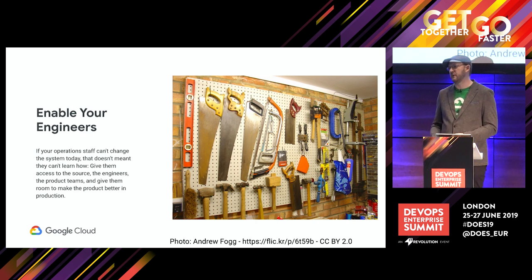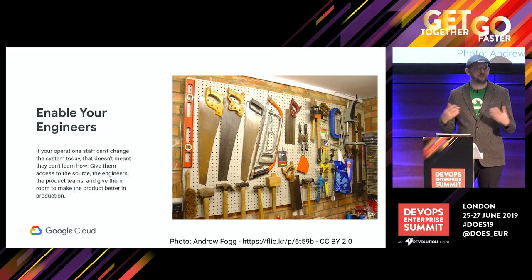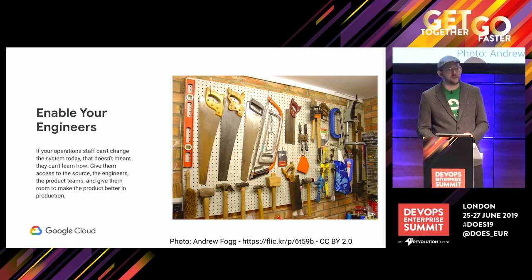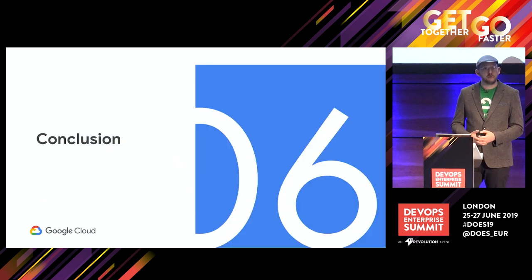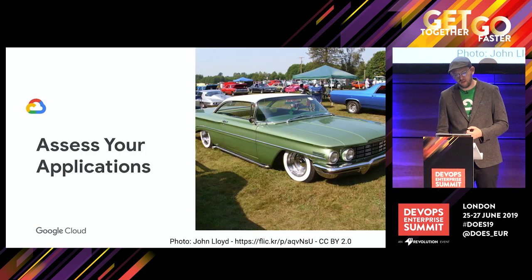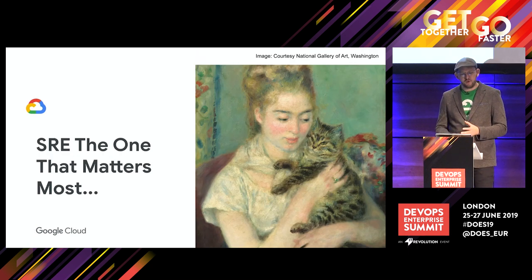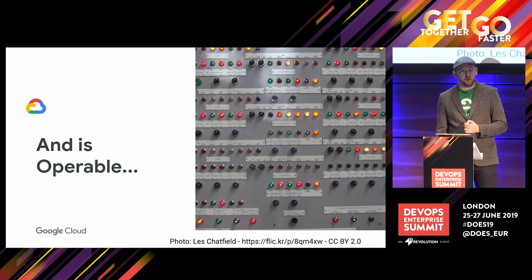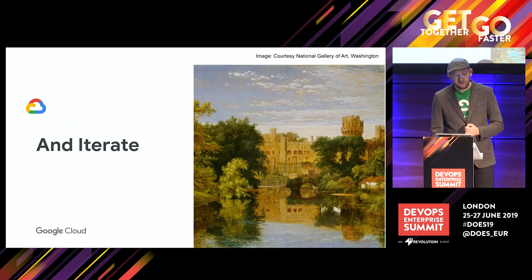This enablement is what will ultimately result in your SRE group really caring about the customer experience and being tooled up to defend that customer experience in the long term. And that's what SRE is all about — aligning the operational aspects of running a system with what your customers actually want, which is a system that works and delivers value to them, which is ultimately what your business wants. In conclusion: assess your applications, SRE the one that matters most, and is operable, and mutable — and iterate.